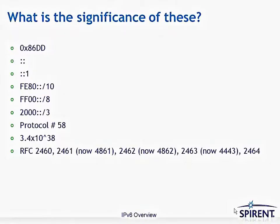These five RFCs are the base IPv6 protocols — the minimum required for an IPv6 implementation. RFC 2460 is the base IPv6 specification, just like RFC 791 is the base IPv4 specification. RFC 2461 is the specification for IPv6 neighbor discovery, similar to ARP with IPv4. RFC 2462 is the SLAAC stateless address auto-configuration description. RFC 2463 is the specification for ICMPv6, and RFC 2464 is the specification for carrying IPv6 packets over Ethernet.